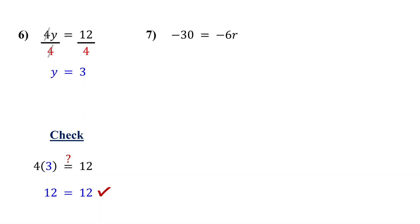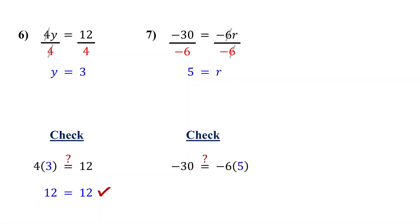Try this with a variable on the right side — follow the same steps. It doesn't matter which side the variable is on. r is being multiplied by negative 6. So to isolate r, divide both sides by negative 6. On the right, the negative 6s cancel out, leaving r by itself. On the left, negative 30 divided by negative 6 is 5. So the solution is r equals 5. Negative 6 times 5 is negative 30. It checks out.